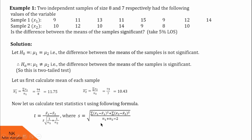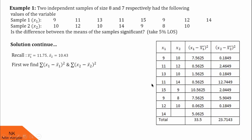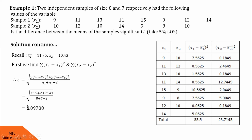Now let us proceed for the calculation of s using a tabulated format. Here I have mentioned all the values of x1 and all the values of x2. In the next column, I am calculating (x1 minus x1 bar) squared, and in the next column (x2 minus x2 bar) squared. The sum of all these values gives summation (x1 minus x1 bar) squared, and this gives summation (x2 minus x2 bar) squared. Substituting: summation (x1 minus x1 bar) squared is 33.5, and summation (x2 minus x2 bar) squared is 23.7143. After substituting and simplifying, we get s equals 2.09788.